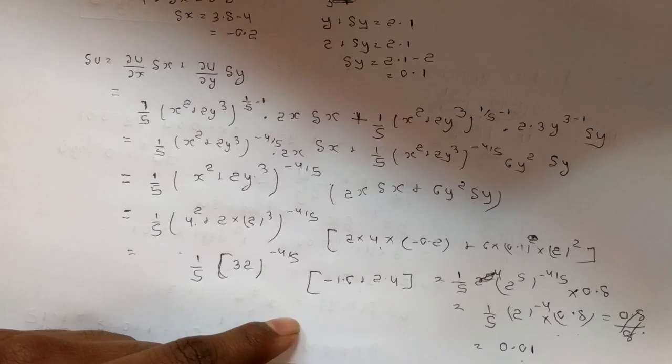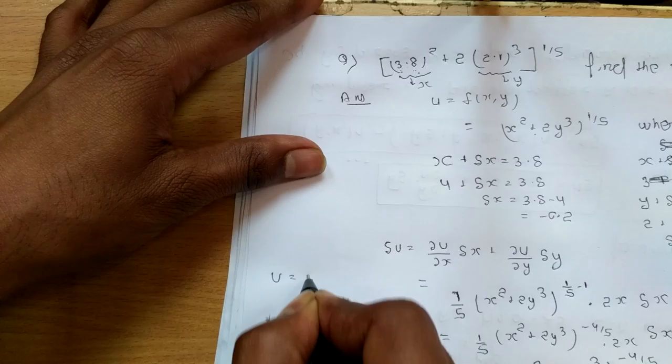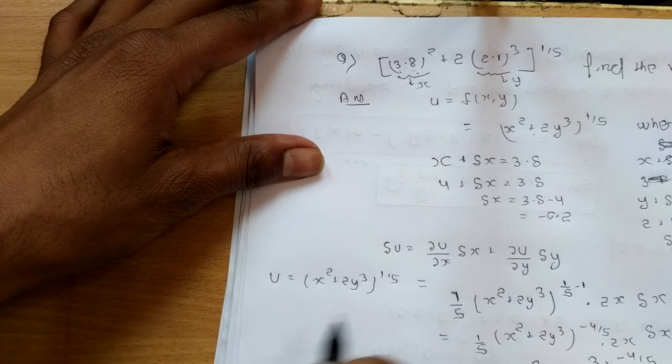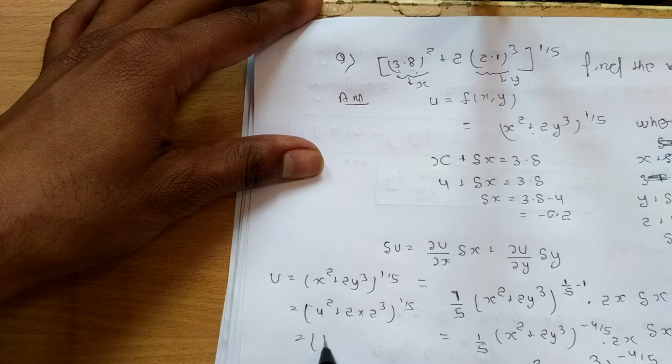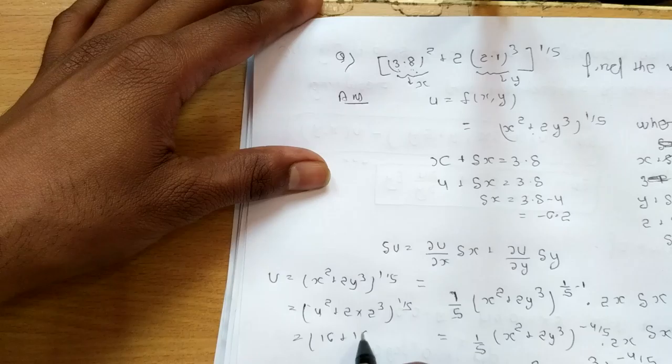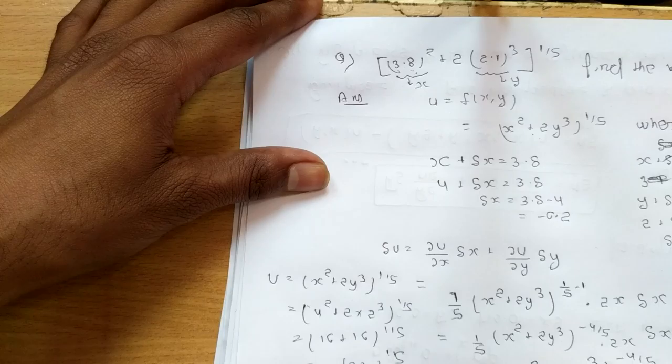Solve करने पर Δu = 0.01. अब हमें u की value चाहिए: u = (x² + 2y³)^(1/5). x = 4, y = 2: (4² + 2·2³)^(1/5) = (16 + 16)^(1/5) = 32^(1/5) = (2^5)^(1/5) = 2.